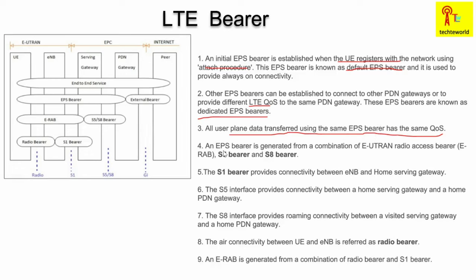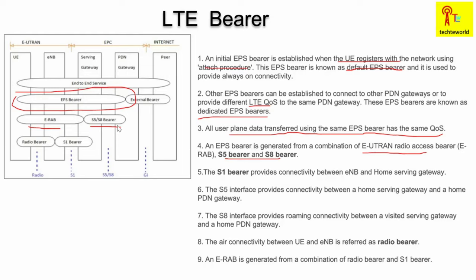An EPS bearer is generated by the combination of the E-RAB (E-UTRAN Radio Access Bearer) and the S5/S8 bearer. If you can see in this diagram, the EPS bearer spans from UE to the PDN gateway. The E-RAB is between the UE and eNodeB, and between the serving gateway and PDN gateway we have the S5/S8 bearer. Together, E-RAB and S5/S8 combinedly make up the EPS bearer.